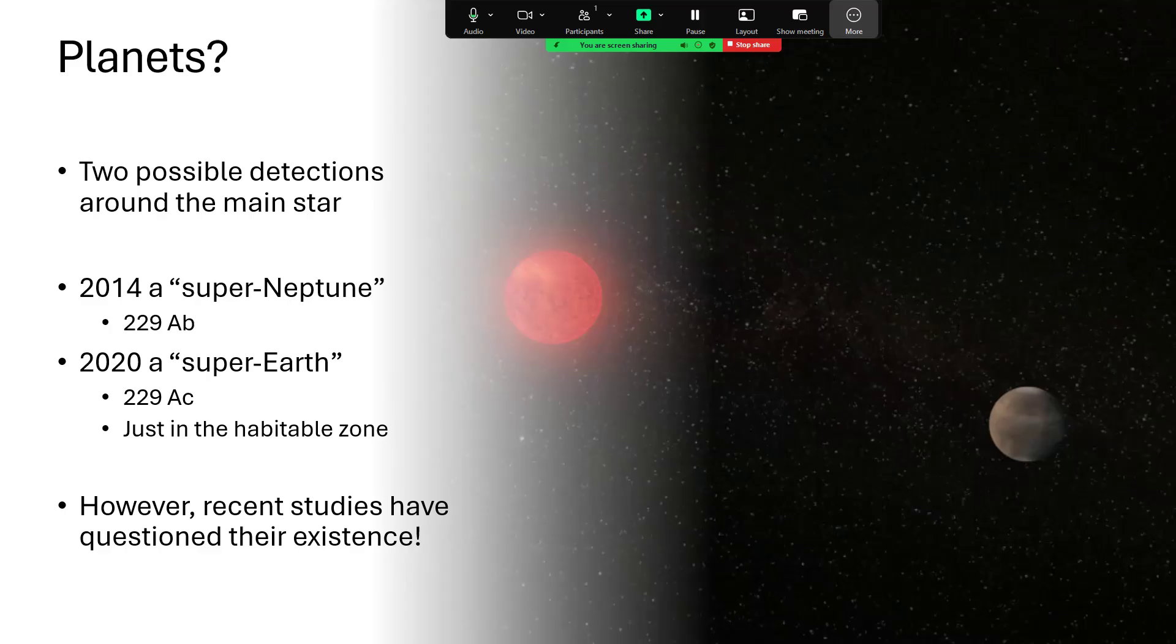Now, in terms of planets rather than brown dwarfs, there have been two possible detections of planets around the main star, Gliese 229A, and these would be 229Ab and 229Ac, the first one being a super Neptune, and the second one being a super Earth. I would have thought a super Neptune is probably really better described as a Saturn, perhaps. But we seem to use the term super Neptune for these. I guess it's because we don't want to imply that they have rings if we don't know that that's true. And for the super Earth, slightly larger and probably rocky planet bigger than Earth. And it happens that this one is in the habitable zone, not too close, not too far away, just at the right sort of temperature for a rocky planet to have liquid water on its surface.